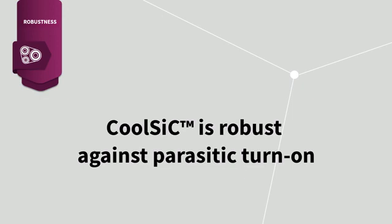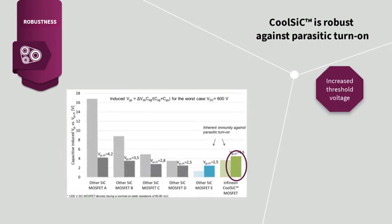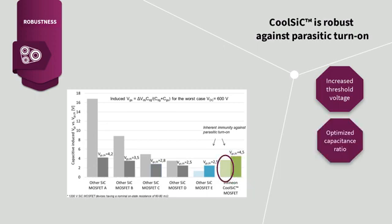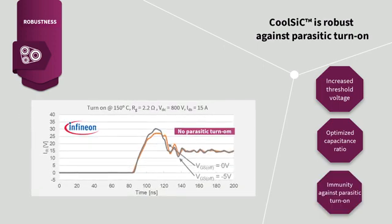Fortunately, CoolSiC MOSFET is already robust against parasitic turn-on due to its increased threshold voltage. Actually, Infineon CoolSiC has a benchmarking high threshold voltage with a typical value of 4.5V and optimized capacitance ratio to minimize the unwanted voltage coupled from the drain-source voltage change. Therefore, CoolSiC MOSFET has inherent immunity against parasitic turn-on, which makes zero-volt turn-off possible.